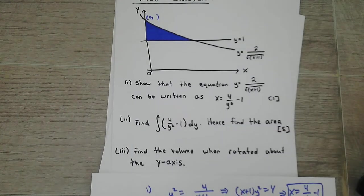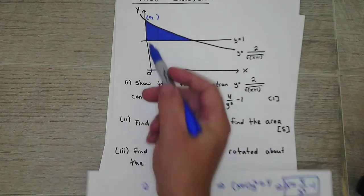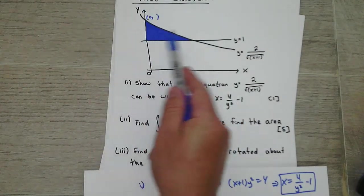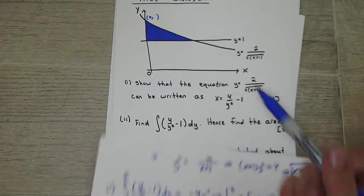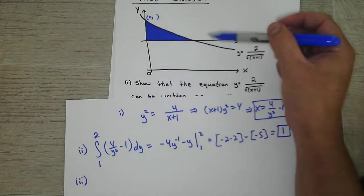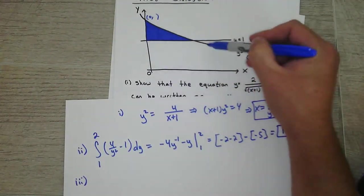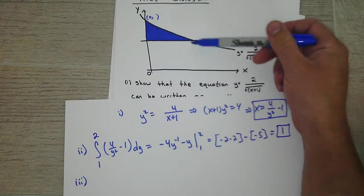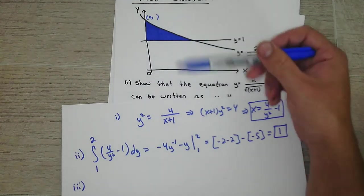Alright, find the volume when rotated about the y-axis. So we're going about the y-axis. So yesterday, you had something similar to this. It was more curved rather than a triangle, but you had this gap here and you had to do it about the x-axis.